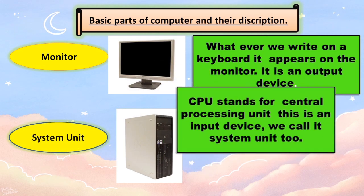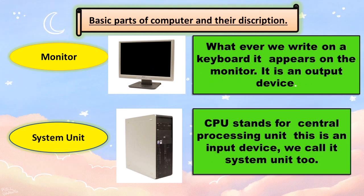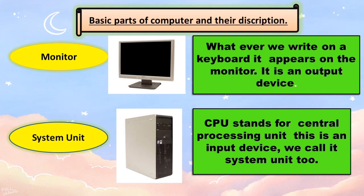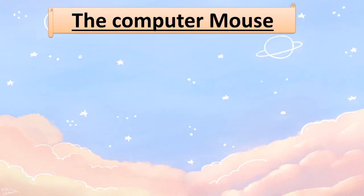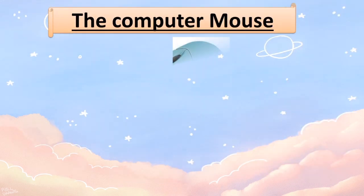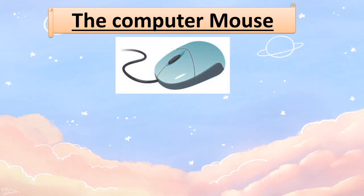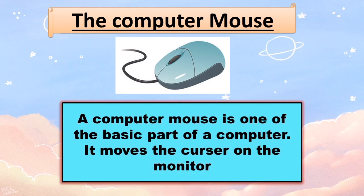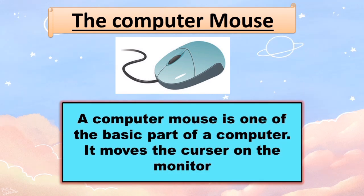The next is the system unit. Here we have the picture of the system unit. CPU stands for Central Processing Unit. We call it the system unit. The next is the computer mouse. Here you have the picture of a computer mouse. A computer mouse is one of the basic parts of a computer.